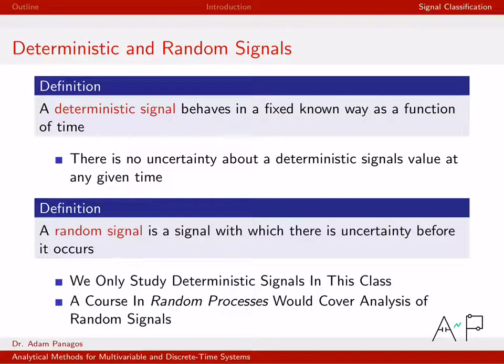All right, so first let's talk about deterministic signals. Here's our definition of a deterministic signal. A deterministic signal is simply one that behaves in a fixed way as a function of time. So when you're working with deterministic signals, there's absolutely no uncertainty about the values at any given time.